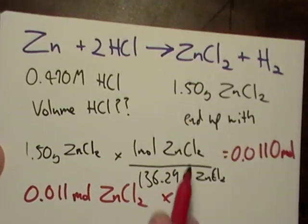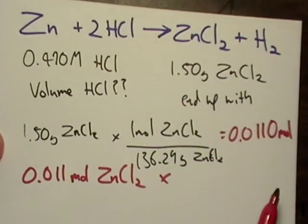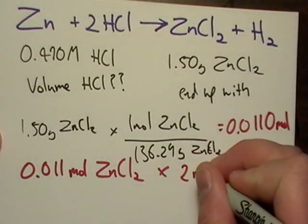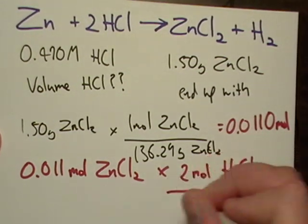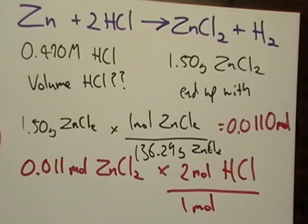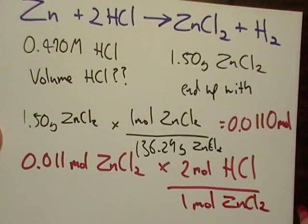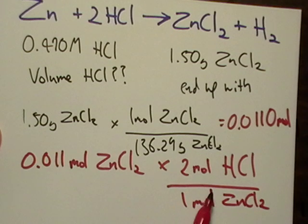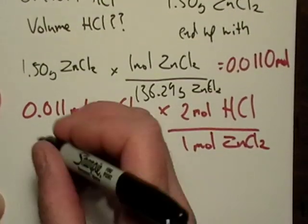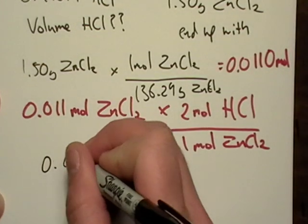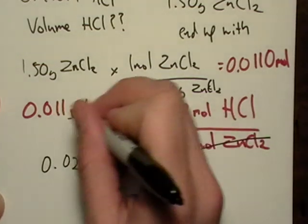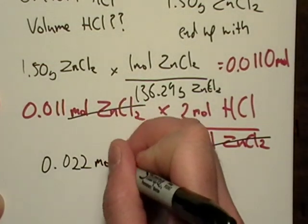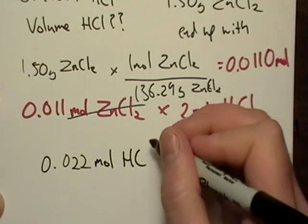These combine in a one to two ratio, so I have two moles of HCl per every one mole of zinc chloride. The moles of zinc chloride cancel out, leaving me with moles of HCl.